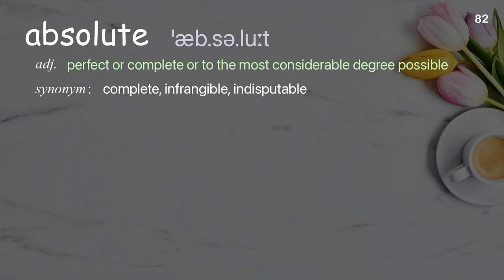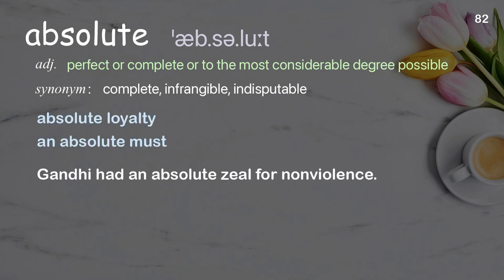Absolute: perfect or complete, or to the most considerable degree possible. Examples: absolute loyalty; an absolute must. Gandhi had an absolute zeal for non-violence.